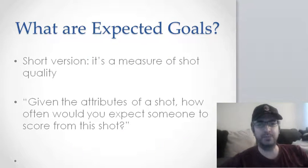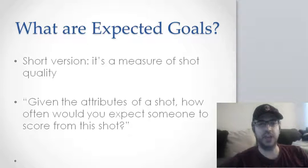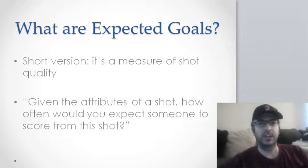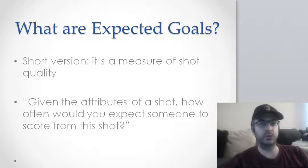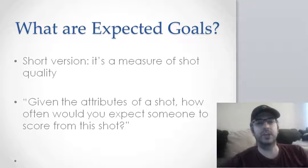Before I talk about how to build the model, I want to give a quick overview of what expected goals actually are. The short version: it's a measure of shot quality. Given the attributes of a specific shot, how often would you expect someone to score from that shot? We're looking to see if a team takes a certain number of shots from a certain position with certain characteristics, how many goals would you expect them to score — how likely is each shot to turn into a goal? You've probably seen these on Twitter — Michael Caley's expected goals maps, Danny Page's simulation tools — but at its core it's simply a measure of the quality of a shot.